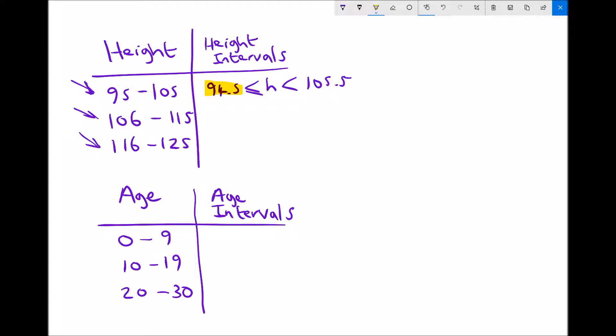And then we've got heights less than 105.5. The reason it's less than and not less than or equal to is because if someone has a height of 105.5 centimeters then they're actually going to fit into the next group up to 115.5. Now what this tells us is that if someone has a height of exactly 105.5, well 105.5 rounds to 106. Therefore they would fit in that middle group.